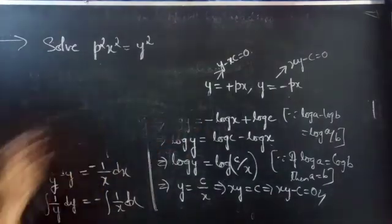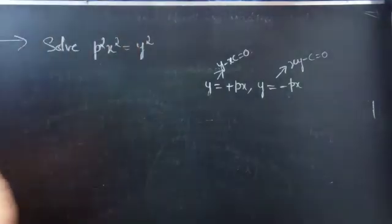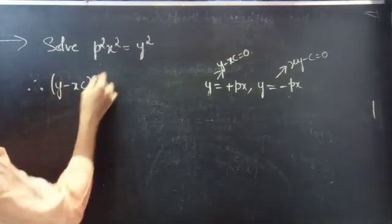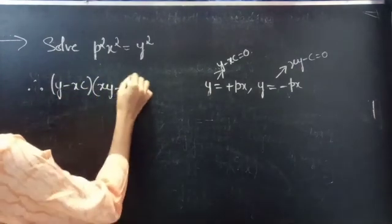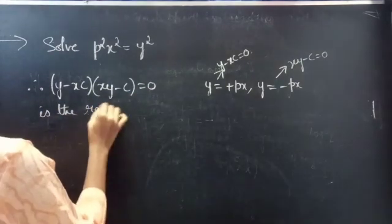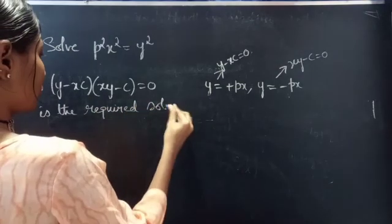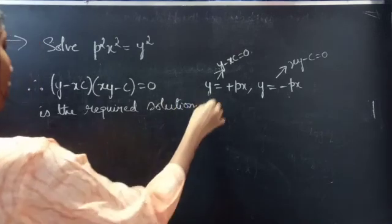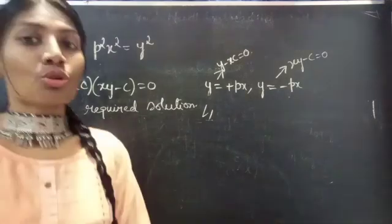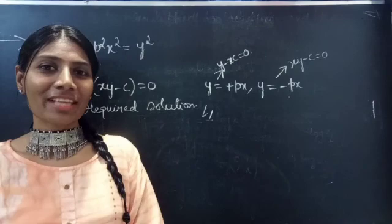The combined form of these two solutions is the required solution for the given differential equation. Therefore, (y minus xc)(xy minus c) equals 0 is the required solution. So, this completes the problem. We have seen a problem from Solvable for P in this video. Hope you understand. We will see you in the next video. Until then, bye-bye.